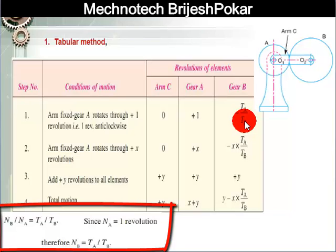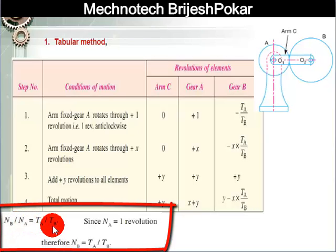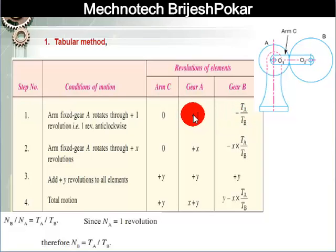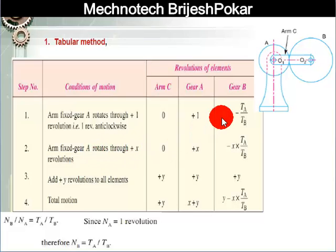The gear ratio is Nb/Na = Ta/Tb. Since Na = 1, Nb = Ta/Tb. We add a minus sign because gear B rotates clockwise while gear A rotates anticlockwise. Next, if arm is fixed and gear A rotates through x revolutions, then instead of 1 we use x, so gear B will rotate by minus x × (Ta/Tb).